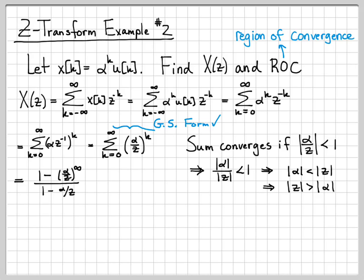Since we're going to assume that alpha over Z's magnitude is less than one, this simplifies into one minus zero, because alpha over Z to the infinity is zero. And then on the denominator, I wrote it as one minus alpha Z inverse.